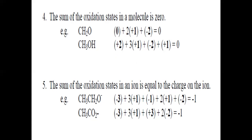Rule number four: whenever calculating the total oxidation state of a molecule, the sum equals zero. For example, carbon is neutral with oxidation state zero, combined with hydrogen plus one and oxygen minus two. The lone pairs of electrons on oxygen form bonds with two hydrogen atoms, making the overall oxidation state of the molecule zero.